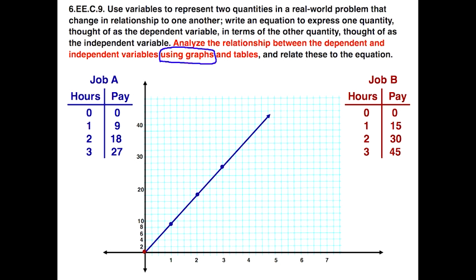Now let's graph job B. We also have (0,0) as our starting point. One hour, $15 for the y-value. Two hours would give us $30. Working three hours would give us $45. Again, we see the linear pattern and we complete that.